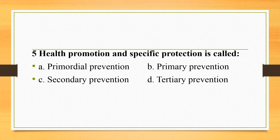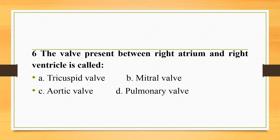Health promotion and specific protection is called primary prevention. In primordial prevention, there is prevention of risk factors. In secondary prevention, there is early diagnosis and prompt treatment, and in tertiary prevention, there is rehabilitation.